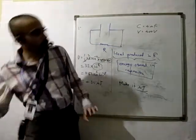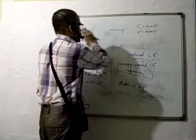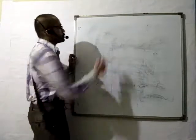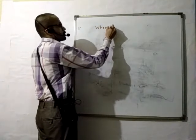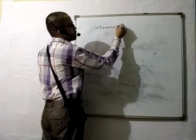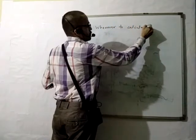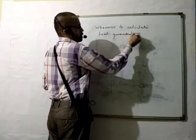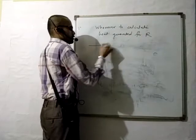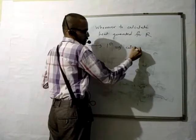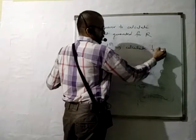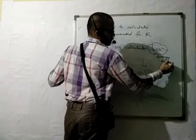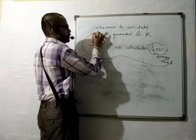Always keep in mind: to calculate heat generated in the resistance, first calculate U = ½CV². The energy stored in the capacitor is equal to the heat generated in the resistance.